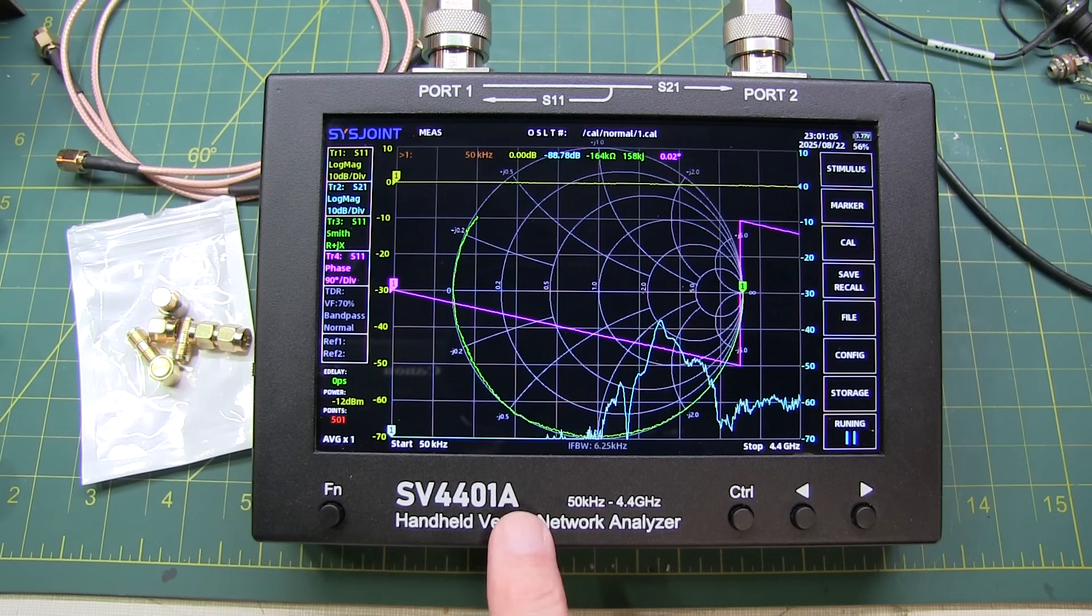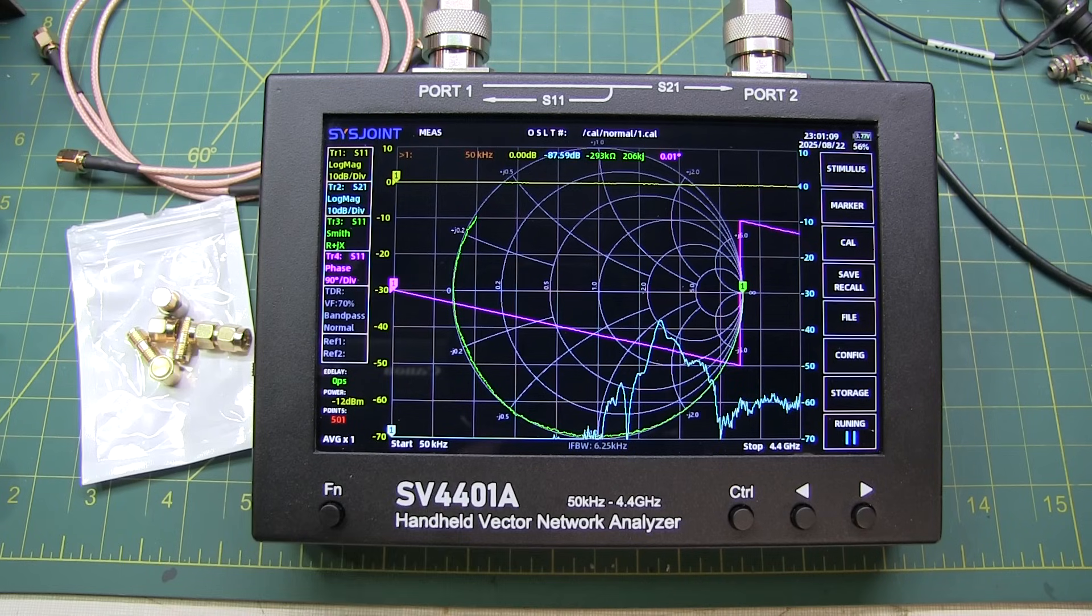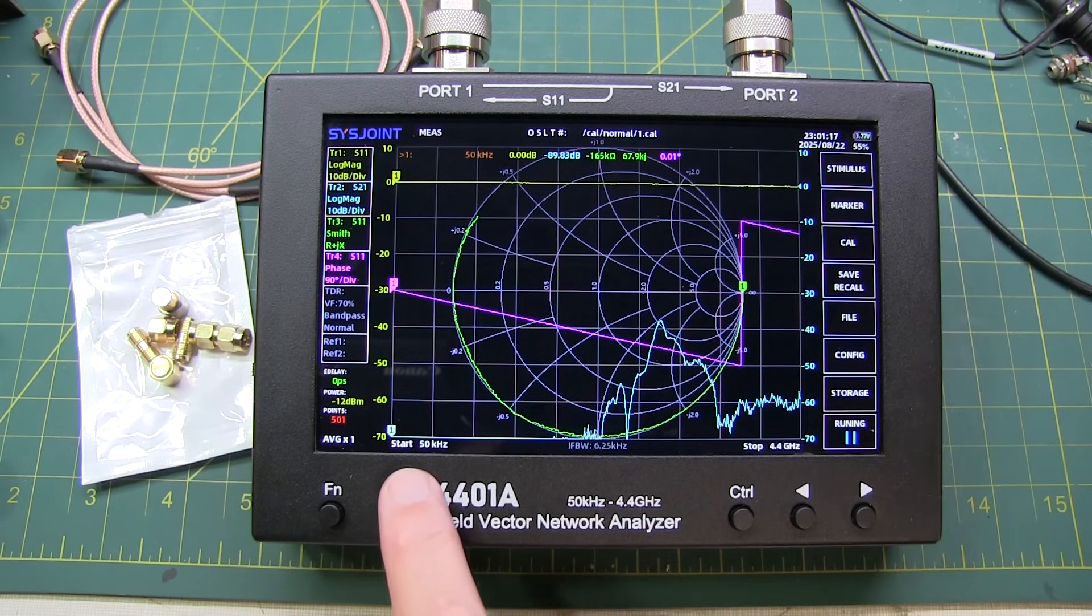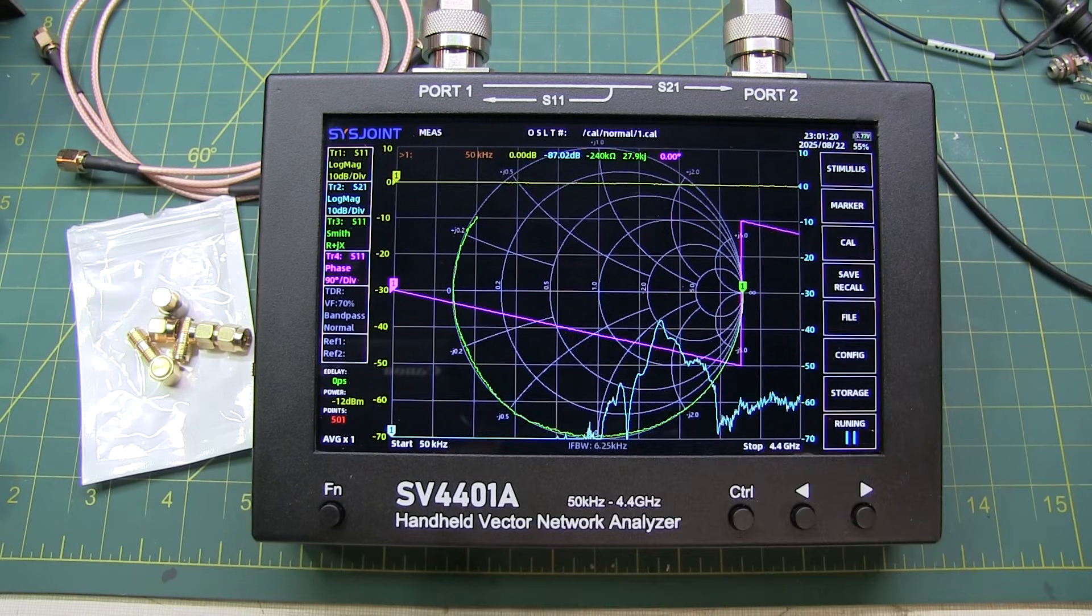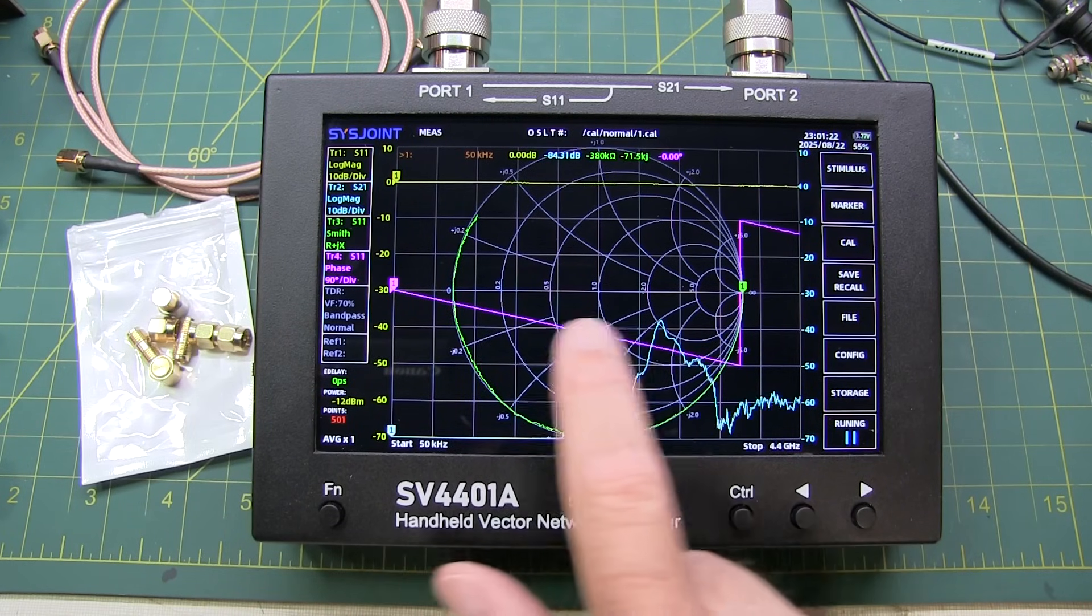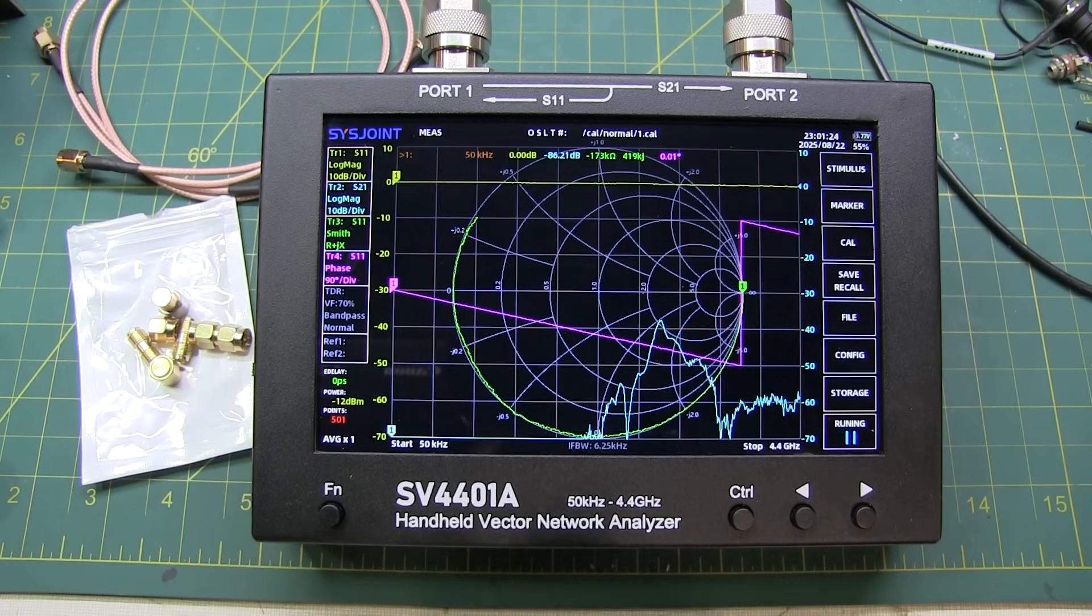Now the Nano VNA H4 does have about 70 dB dynamic range. They don't specify which measurement, and that only applies up to 300 MHz. So significantly better RF performance here. The larger screen gives you a lot more readable, usable area and can feature up to 1001 points. I've got it configured right now for 501 points.